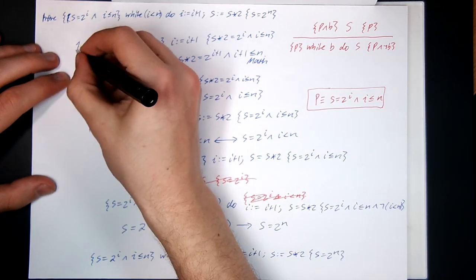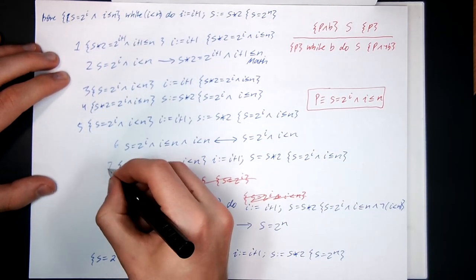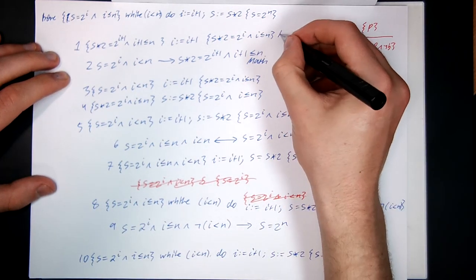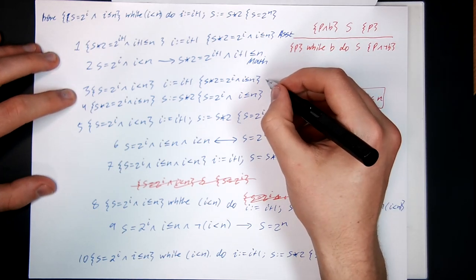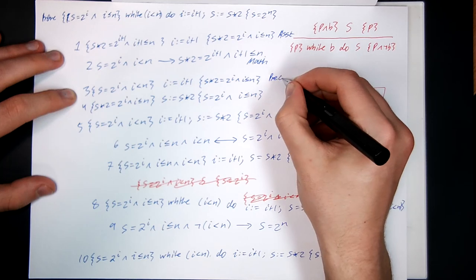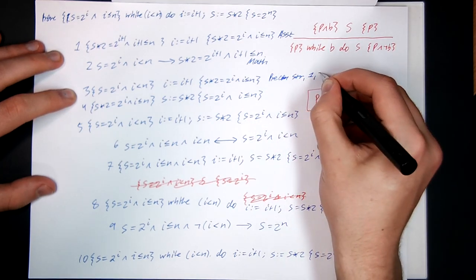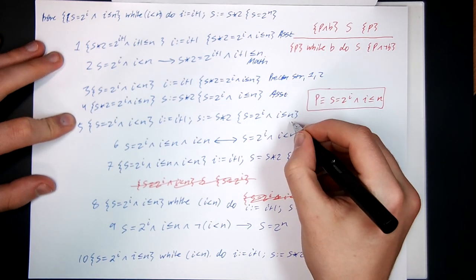Our proof is done so we can fill our line numbers and our justifications. 6, 7, 8, 9, 10. So this was assignment. This was by math. This was precondition strengthening lines 1 and 2. This was assignment. This is sequencing of 3 and 4.